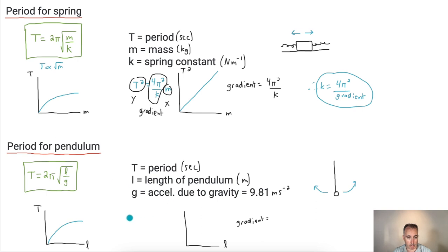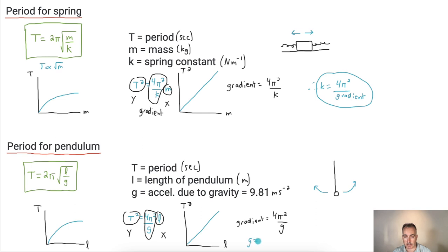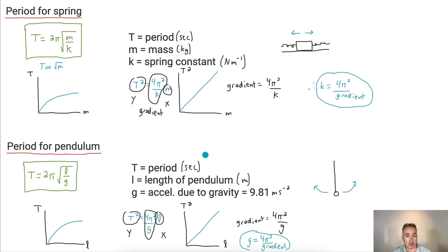Squaring gives T squared equals four pi squared times L over g. If we graph T squared as the y-value and L as the x-value, the gradient is four pi squared over g, giving a straight line through the origin. From the gradient, we can find g: g equals four pi squared divided by the gradient. So if you did an experiment with pendulums of different lengths, measured their periods, and graphed T squared versus L, the gradient of that graph would let you determine g experimentally.